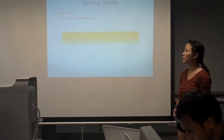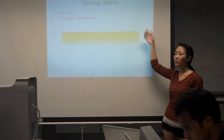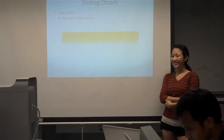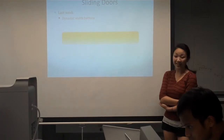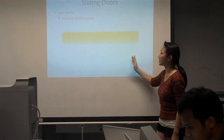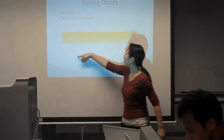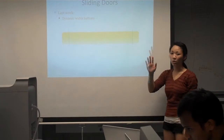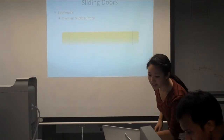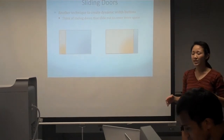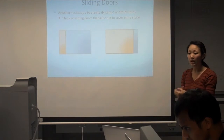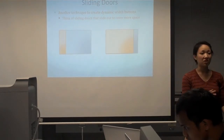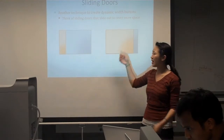One application of background positioning is a technique called sliding doors. Last week you learned how to make dynamic-width buttons. If this was the button image, you would slice it left and right, because of the rounded corners — it's hard to repeat those. You have one side that's the left, one side that's the right, and a really thin repeating section in the middle. In sliding doors, instead of slicing left, right, and middle, you just slice left and right. Think of sliding glass doors that slide out to cover more space.